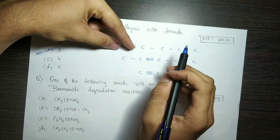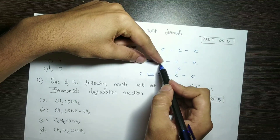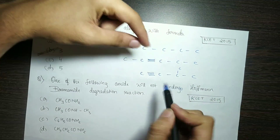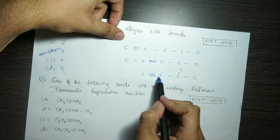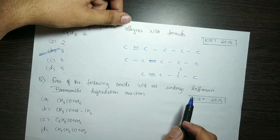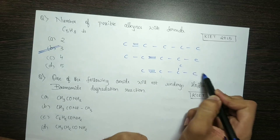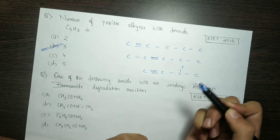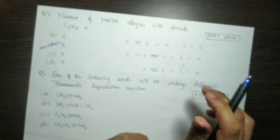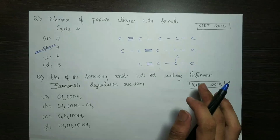First carbon has a triple bond. We have to branch it, but that branching is not valid. So the answer is three structures.